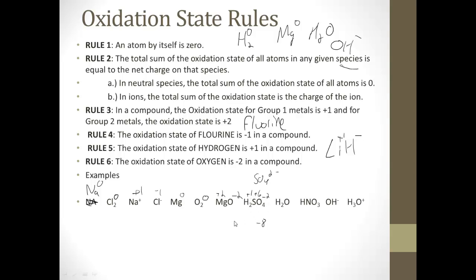Which means the S is going to be plus six. Because we have two hydrogens — that's plus two — and four oxygens at minus two each, so plus two minus eight means we need plus six to balance. For H2O, oxygen is minus two and each H is plus one. For HNO3, the hydrogens are plus one, the oxygens are each minus two for a total of minus six. I put the oxidation state of each oxygen on top, then the total sum of minus two times three for minus six.